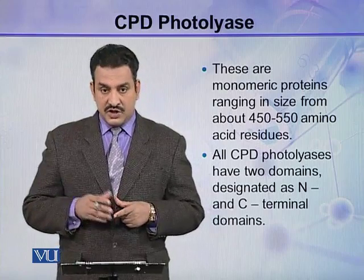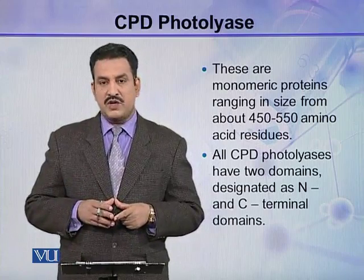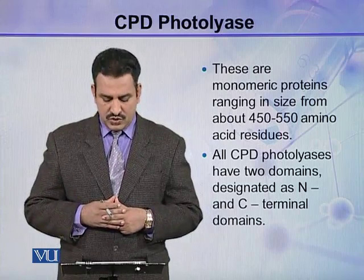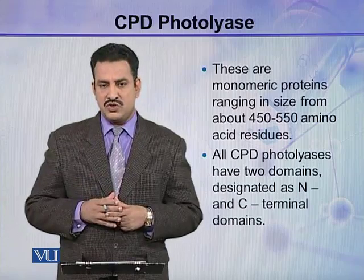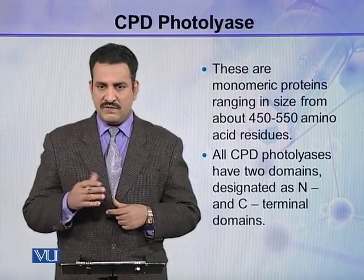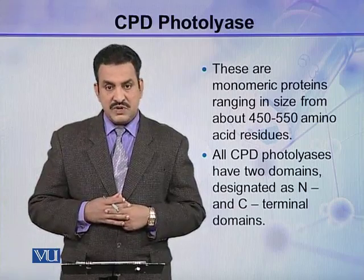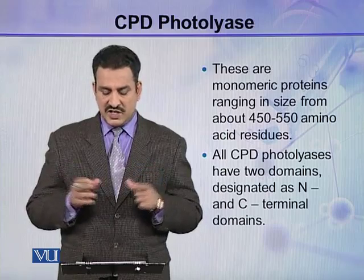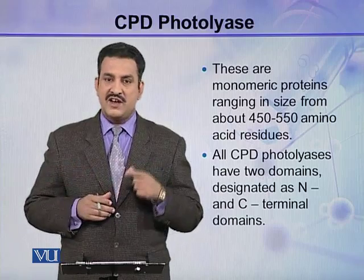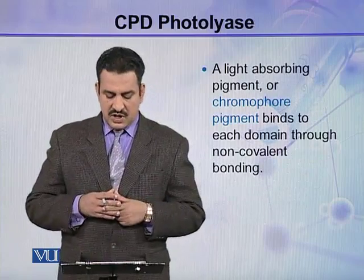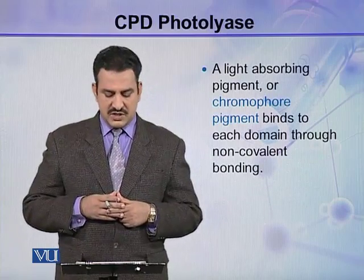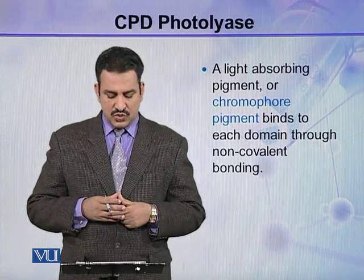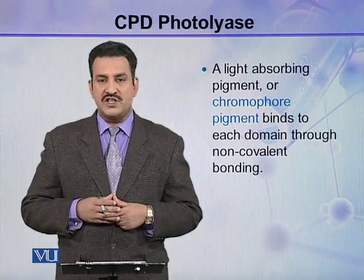CPD photolyases are monomeric proteins, and they range in size from about 450 to 550 amino acid residues. All CPD photolyases have two domains, designated as the N-terminal domain and the C-terminal domain. A light-absorbing pigment, or chromophore, binds to each domain through non-covalent interactions.